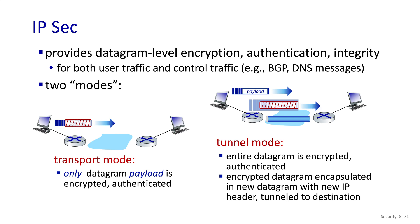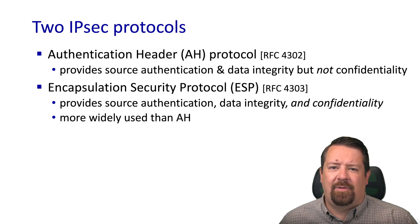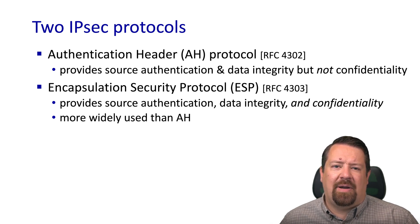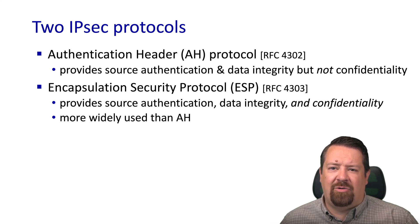This tunneling mode is what's commonly referred to as a VPN, or virtual private network. We have two IPsec protocols defined in two different RFCs. The first is the authentication header protocol, which provides authentication and data integrity verification but does not encrypt the payload — so it does not provide confidentiality — and is used infrequently in practice. What we typically mean by IPsec is the Encapsulation Security Protocol, RFC 4303, which provides all of the above along with confidentiality by encrypting the payload.